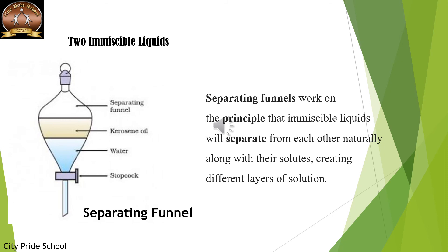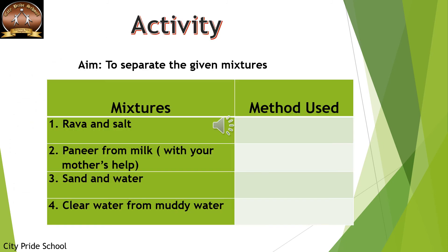We are now done with all the methods of separation, and there is an activity for you to do at home. There are four different types of mixtures to separate: rava and salt, paneer from milk (you can do this with your mother's help using the gas stove and observe the process), sand and water, and getting clear water from muddy water. Write down the method used for each.